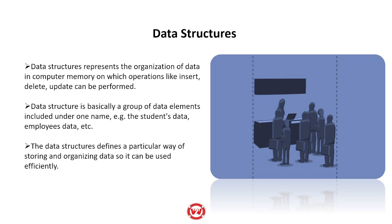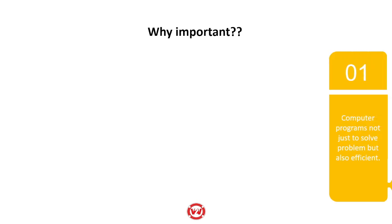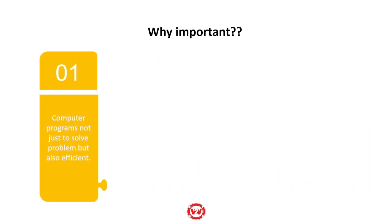The data structure defines a particular way of storing and organizing data so that it can be used efficiently. Computer programs are not just to solve our problem, but they should also be efficient. If you write a program that adds two numbers but uses five or six variables when only two or three are needed, you are using a lot of unnecessary memory. So we need to understand how to organize the data properly.